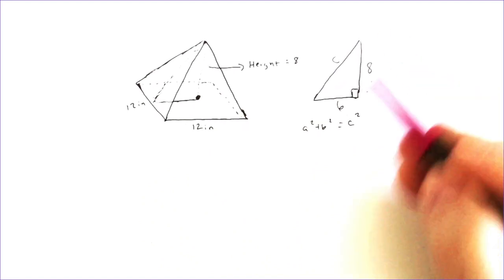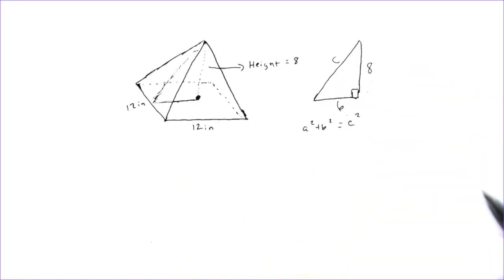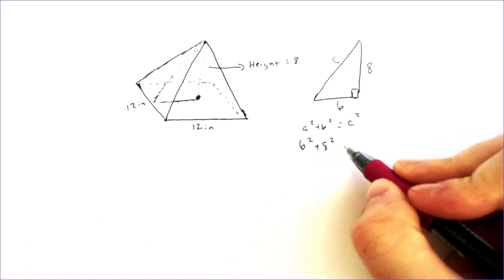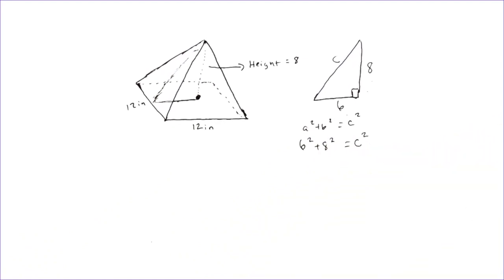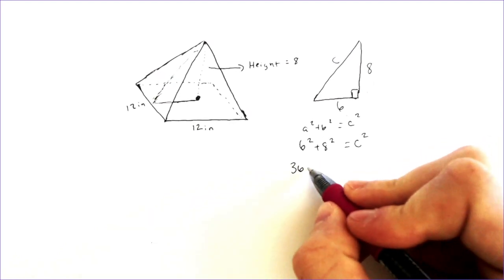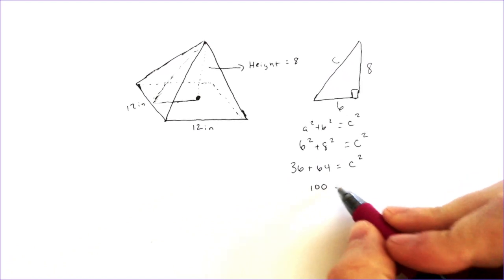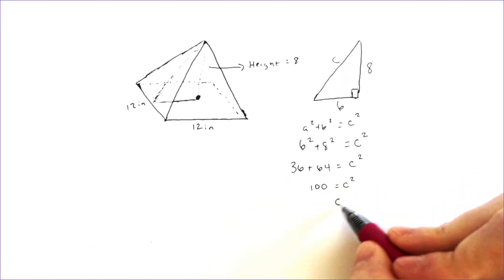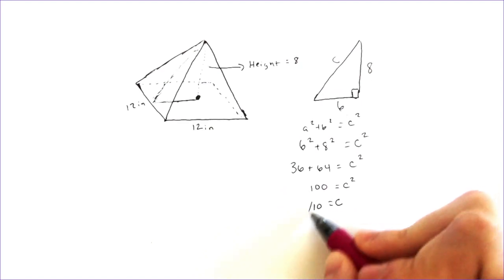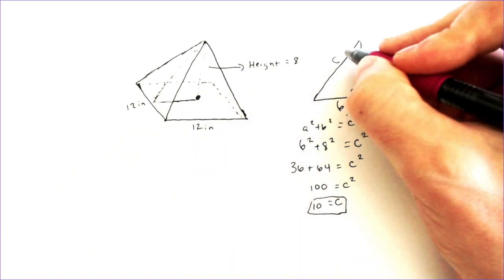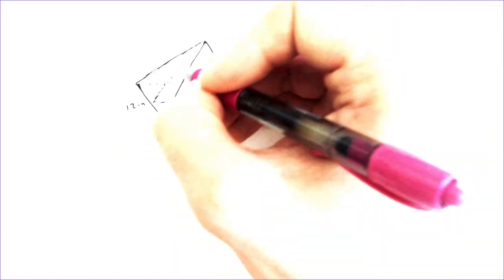So we can follow through with the Pythagorean theorem. We're looking for the slanted height, which is c. We have 6 squared and 8 squared equals c squared, which turns into 36 plus 64 equals c squared. When we follow through by square rooting 100, the square root of 100 gives us 10 as our c, which really gives us our slant height of 10.